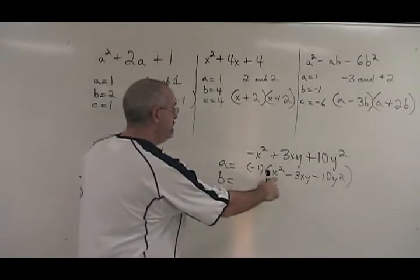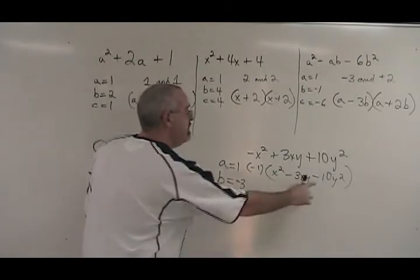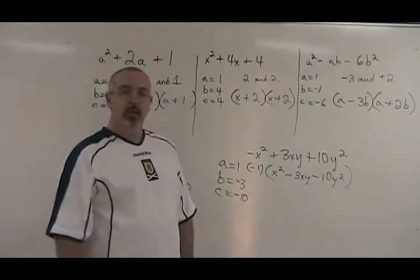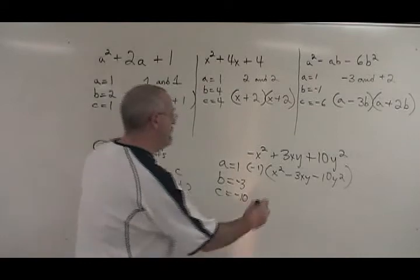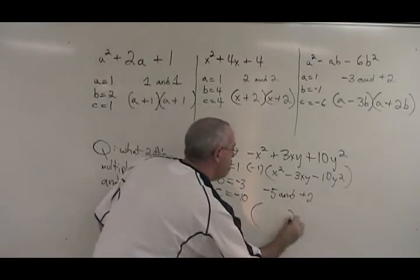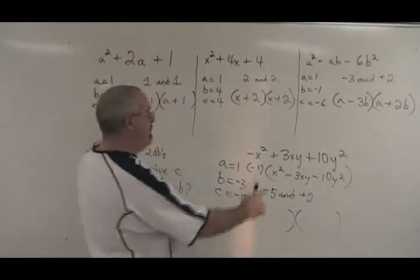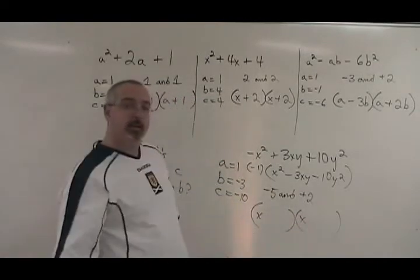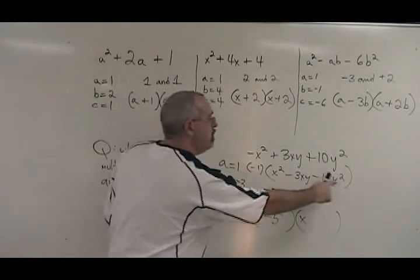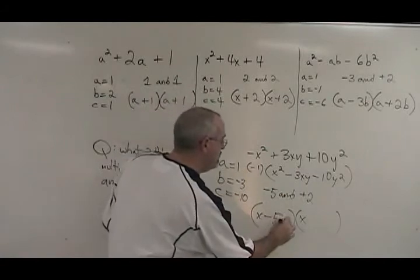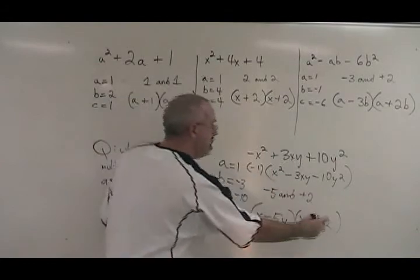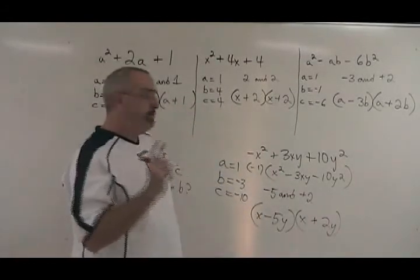The numerical coefficient of the first term is 1, the second term negative 3, the third term negative 10. What two numbers multiply to get negative 10 and add to get negative 3? Well, of course, it's going to be negative 5 and positive 2. We write our brackets. We write our x squared by having an x multiplied by an x. We have negative 5, that means minus 5. We have the extra y in this expression, so it becomes minus 5y. We have plus 2, we write plus 2, and we have the extra y, so we need a y.